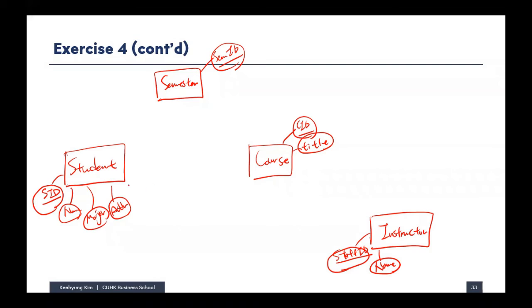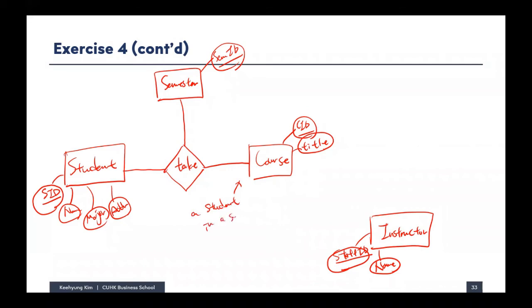Now for the grade report, we think about how a student gets a grade. A student will get a grade after taking a course in a given semester. So we make a 'take' relationship: a student enrolled in a certain semester takes a course in that semester — making this a ternary relationship. Then we determine the cardinality: from the student perspective, a student in a semester can take many courses, minimum zero.